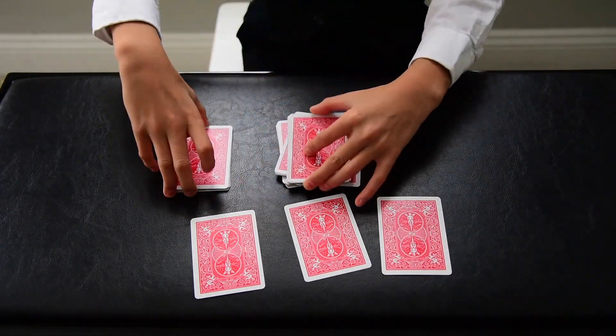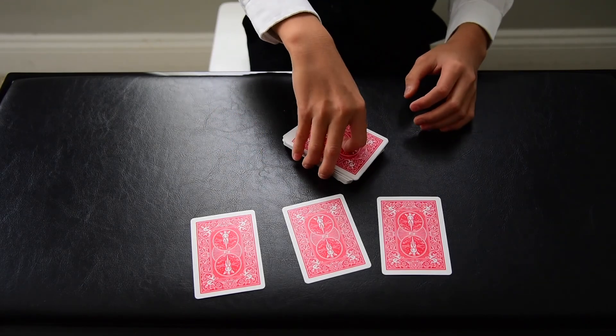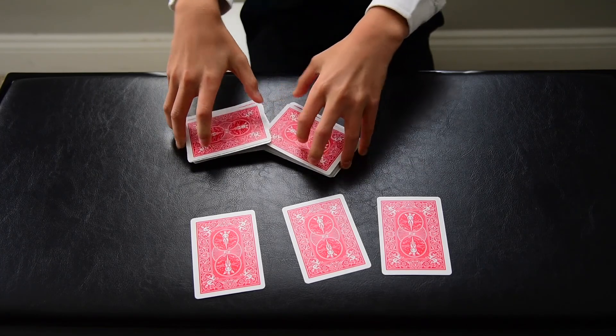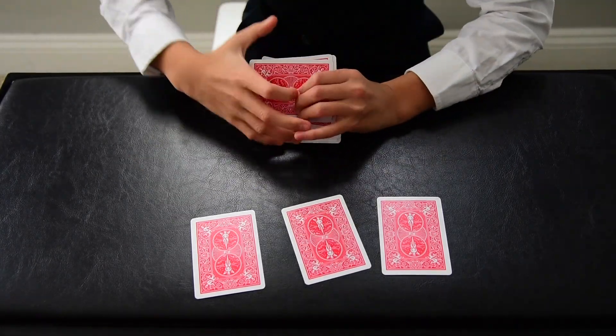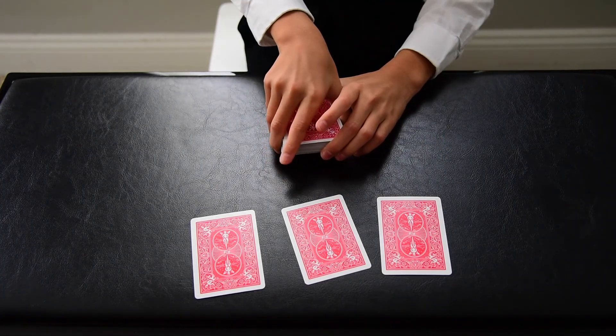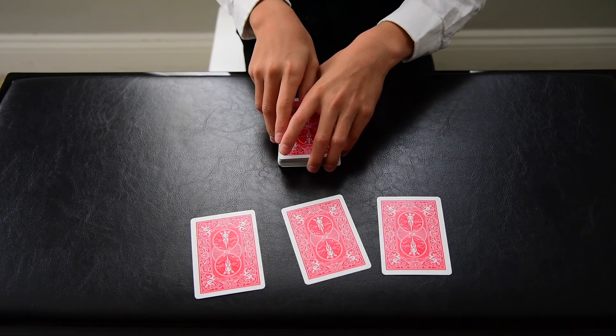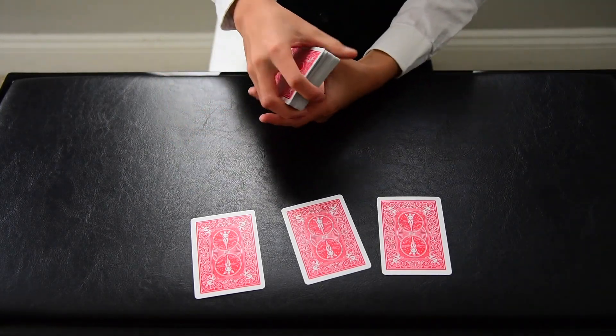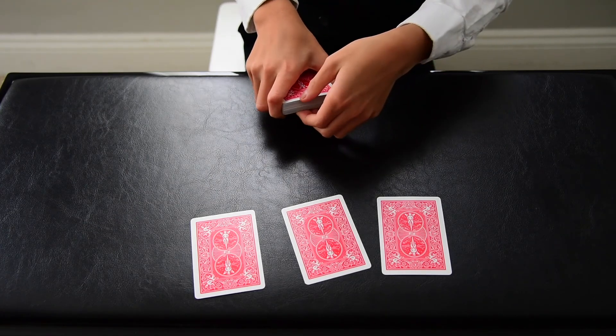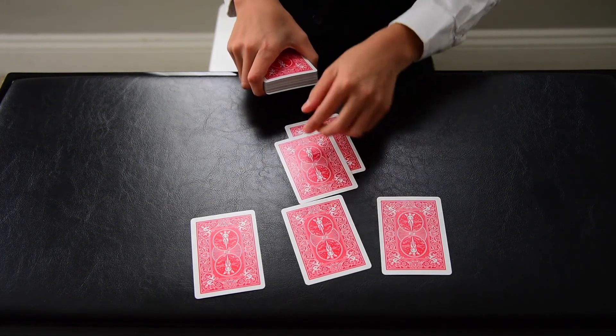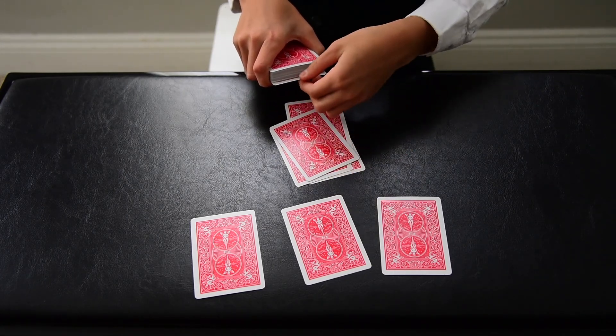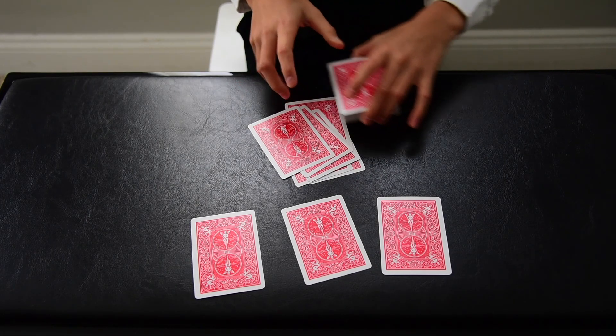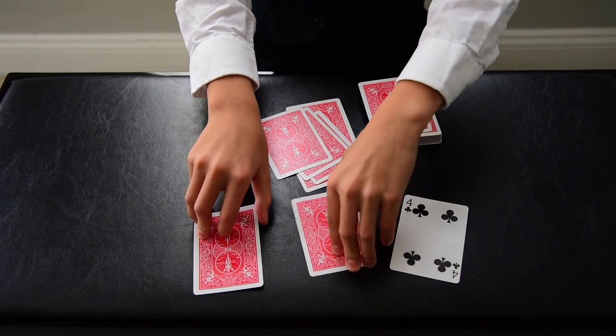Now I put all the cards into the middle of the deck and give the deck a quick shuffle. Now I ask my spectator to select any number from 5 to 15. Seven. We deal off seven cards from the bottom: one, two, three, four, five, six. Before taking a look at the seventh card, we're just going to take a look at these three cards.